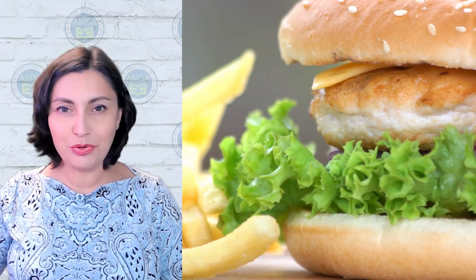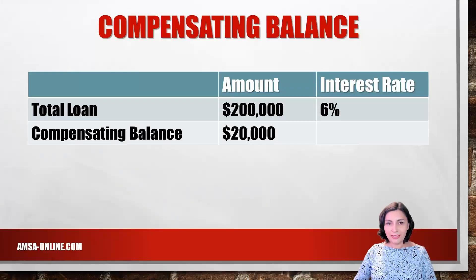Let's take a look at an example of a compensating balance. Assume you are interested in purchasing a franchise from McDonald's and need to borrow $200,000 for one year. The bank has approved a loan for you at an interest rate of 6 percent. In addition, the bank requests that you keep $20,000 in the bank as a compensating balance related to your loan.